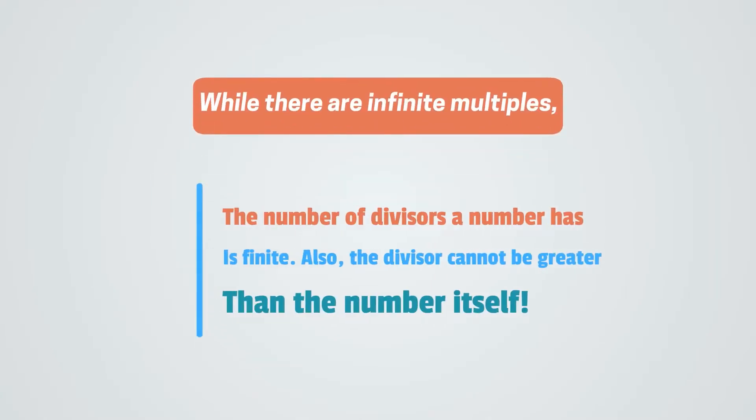While there are infinite multiples, the number of divisors a number has is finite. Also, the divisor cannot be greater than the number itself. Think about why that makes sense.